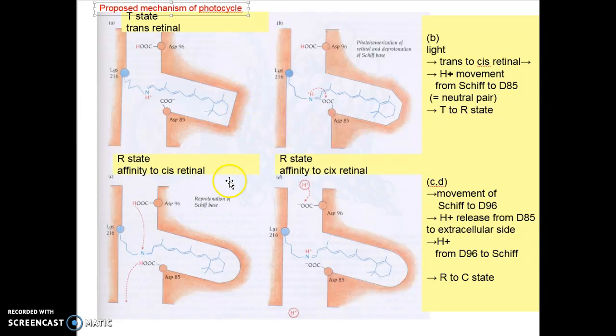Initial state is going to be T-state which has a trans form of retinal. Retinal is very close to the aspartic acid 85 in the middle. With light being illuminated, retinal changes to cis from trans.